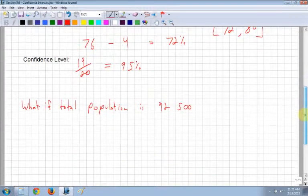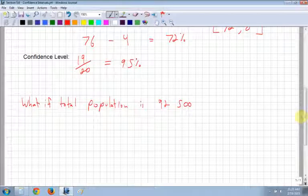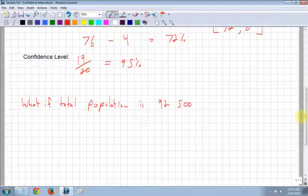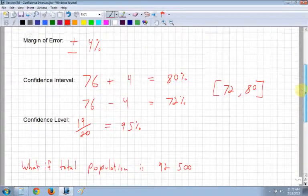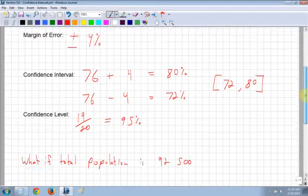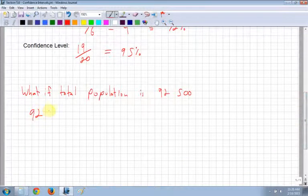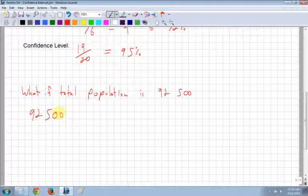Okay. So what if the total population was 92,500 people? So that's the total population. And we said that out of that total population, 76% of people have a social networking site. So here, think of a city. This is almost the same size of my city in Kamloops, 92,500 people, pretty close.